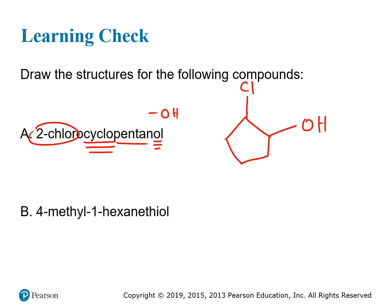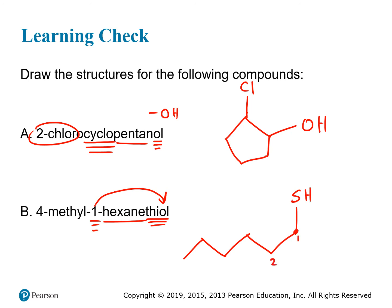For 4-methyl-1-hexanethiol, we have a thiol group on a hexane chain with no 'cyclo,' so it's an open chain six carbons long. The thiol is on the first carbon, so draw it at one end and count: one, two, three, four, five, six. Place a methyl group on carbon four, and that gives us the structure of 4-methyl-1-hexanethiol.